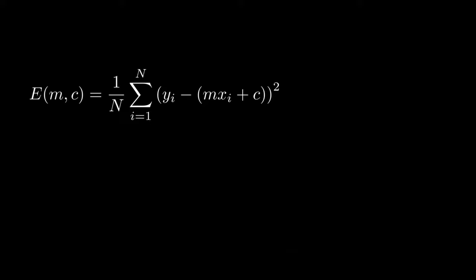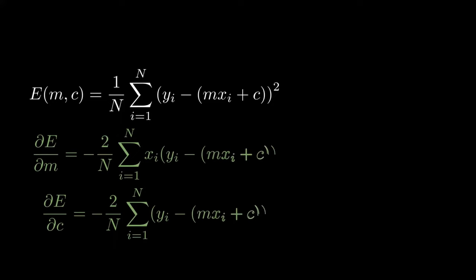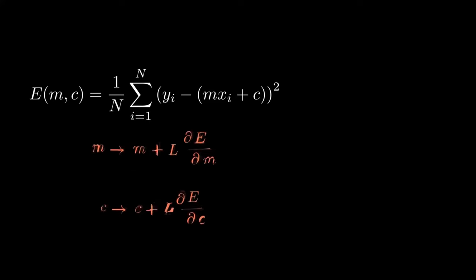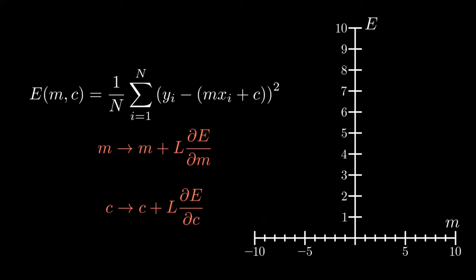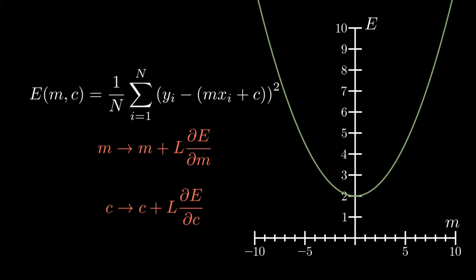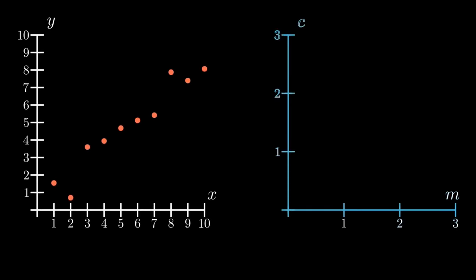The error is simply a function of the parameters of our model, where we sum over all the data points and take the difference squared. We can have an iterative model based on these gradients — the method I'll be talking about is gradient descent, where you simply choose your parameters such that you minimize the error. This gives you an iterative scheme where you calculate the gradient of your error with respect to your parameters and use this to update the parameters. If we pick one of our parameters, say m, the error curve could look something like this: we start with some random guess for the gradient which has a certain error, and then we use gradient descent to keep moving in the direction of lowest gradient to reduce the error.